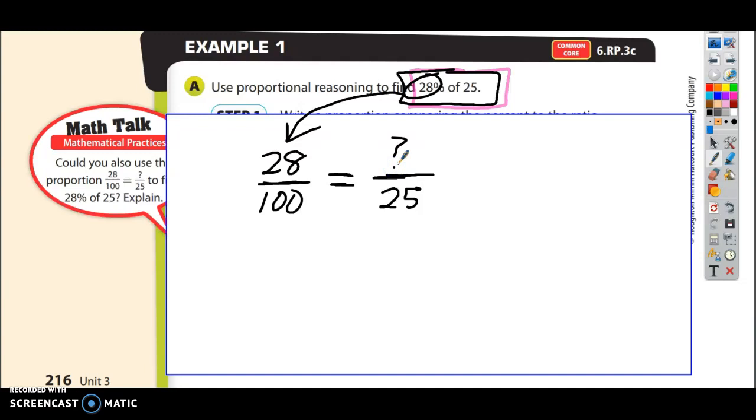Now what do you notice? Well what you should notice is that if you divided 100 by 4 you would get 25. And this is why proportional reasoning works really well for this. 100 divided by 4 is 25. So therefore you need to do 28 divided by 4, which is going to be 7. So the answer is going to be 7.